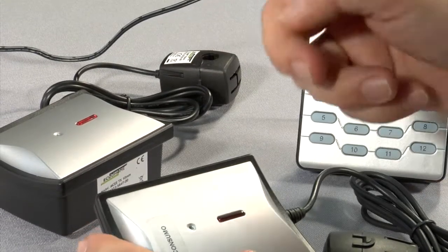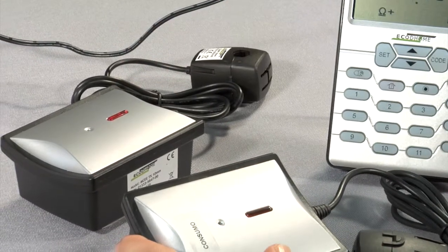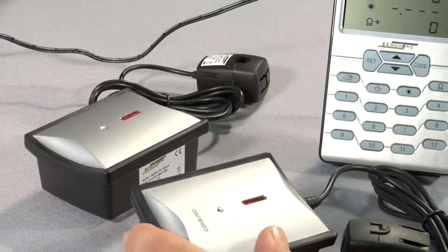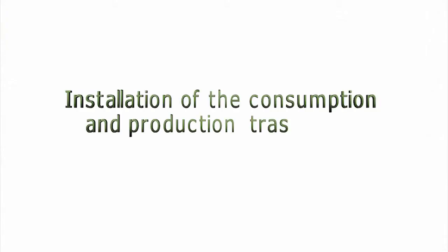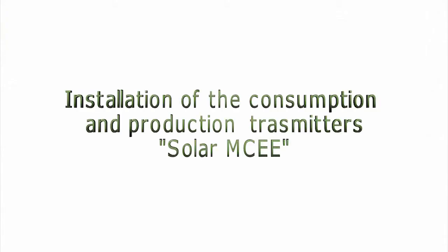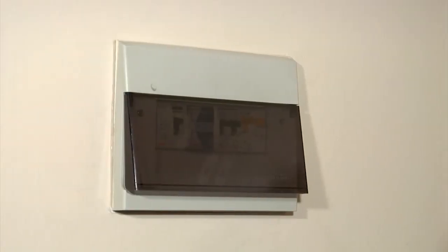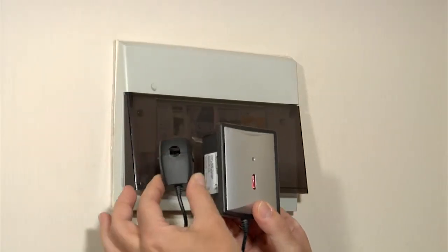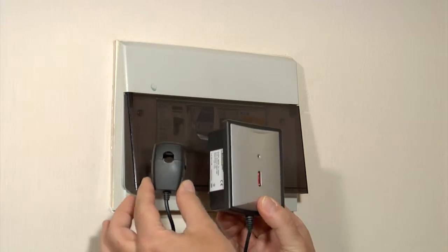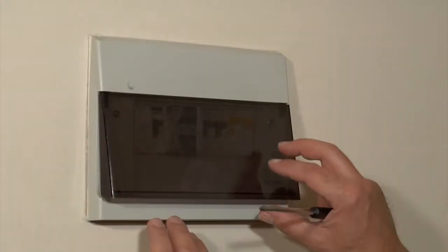Label the transmitter as the consumption meter to avoid any confusion later. We proceed in the same way for the production transmitter. Now follows the process for installing the power consumption transmitter for the MCE Solar inside the main distribution board.